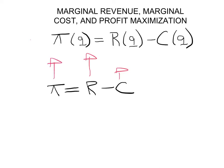How do we call that change in revenue when you produce the next unit? We call that marginal revenue — it's how much your revenue changes every time you produce one more unit. And how do we call the term that tells you how much your costs change every time you produce one more unit? That is called marginal cost. So when marginal revenue is larger than marginal cost, your profits will go up.